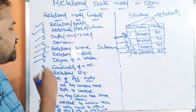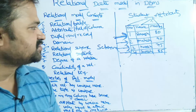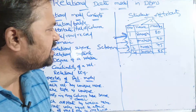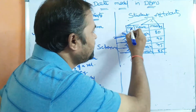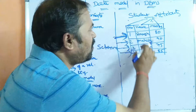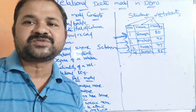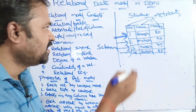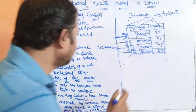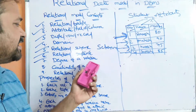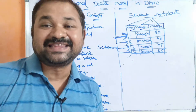Now let us see the degree of a relation. Degree of a relation means how many columns are there — the number of attributes or columns of the table. Here we have three columns — one, two, three — so the degree of the relation is three.